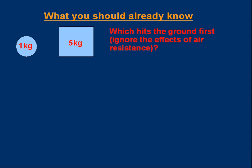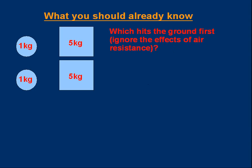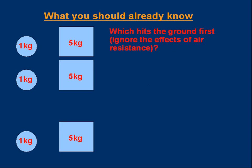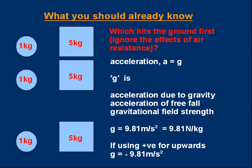As I hope you know, the answer is that they hit the ground together. They will fall, keeping together, and strike the ground together. That's a result of the fact that they have the same acceleration downwards — the acceleration due to gravity g, which is about 9.81 meters per second squared. So you should already know that a falling object has acceleration g, which can be called gravitational field strength or acceleration of free fall. Its value is 9.81 meters per second squared, or 9.81 newtons per kilogram.